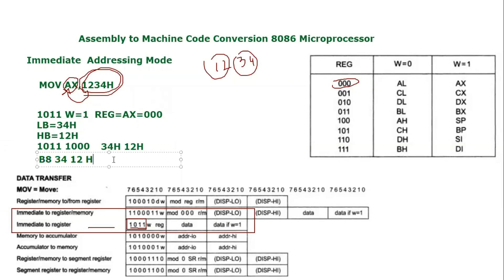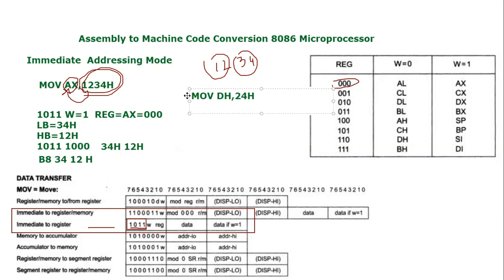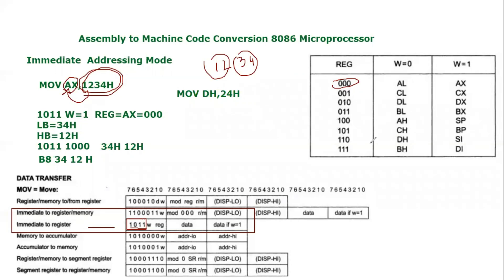So the complete hexadecimal version of this instruction is B8 34 12. I hope you have understood this assembly to machine code conversion. Now let's take another example — MOV DH, 24h — this time using an 8-bit register. It is immediate to register, so we look up DH in the chart.